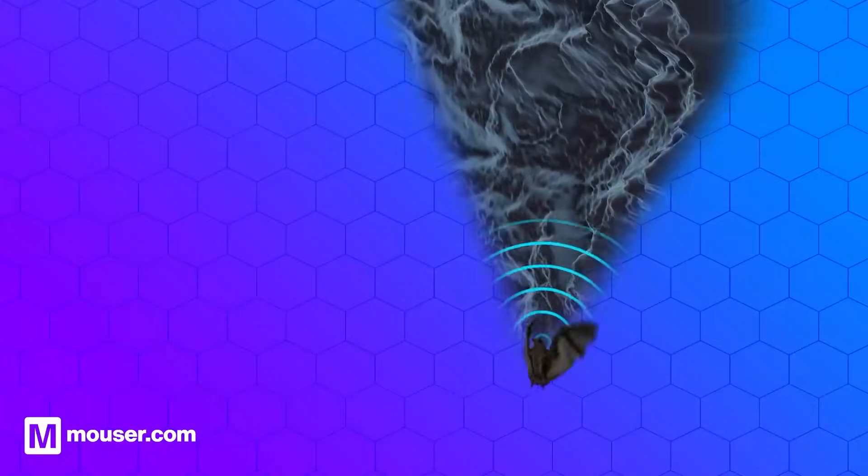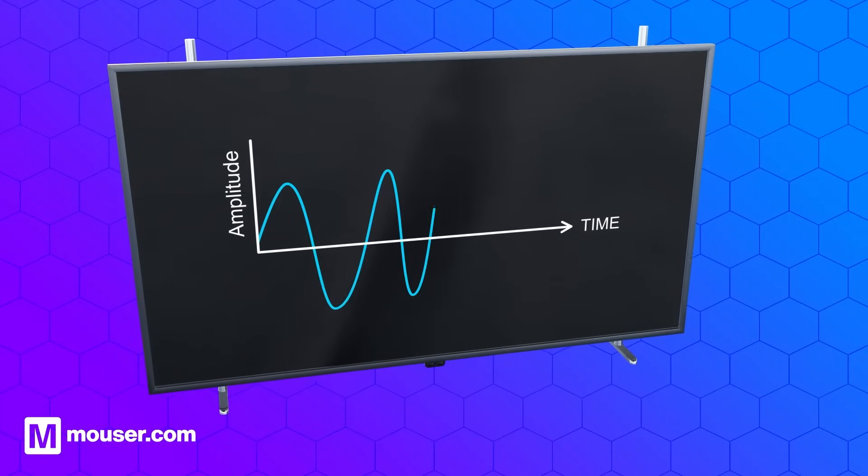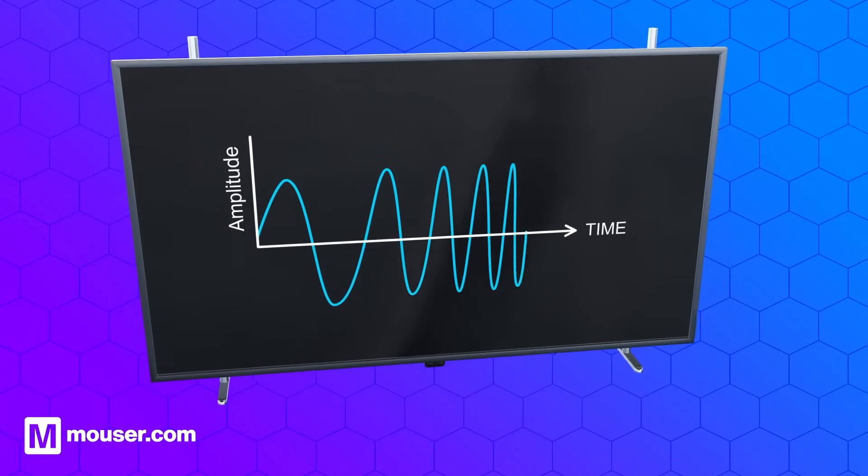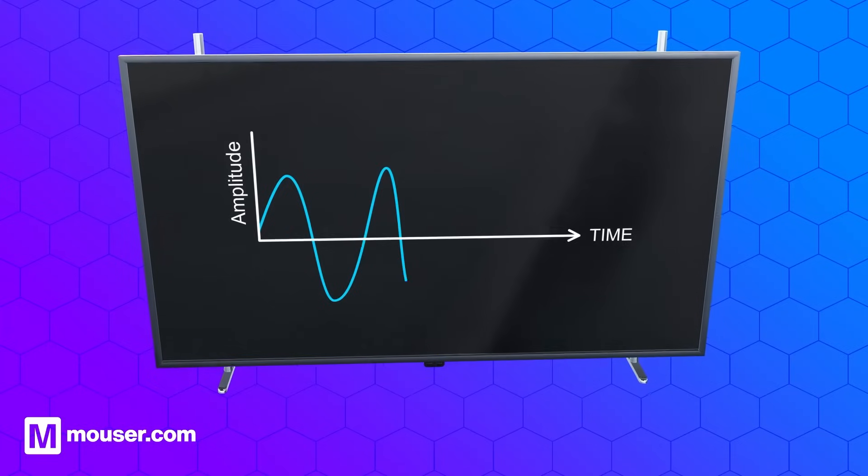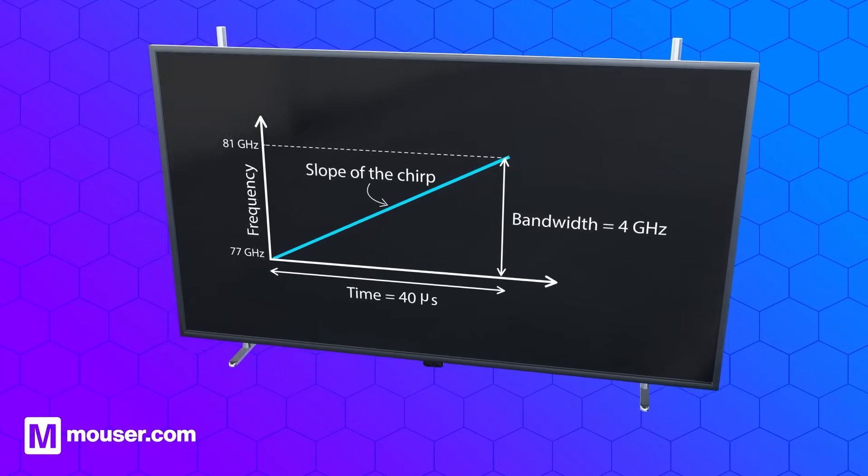Similar to bats, a millimeter wave sensor emits a chirp, or frequency modulated continuous wave, known as FMCW. The chirp typically starts at 60 gigahertz, increasing in frequency over time.